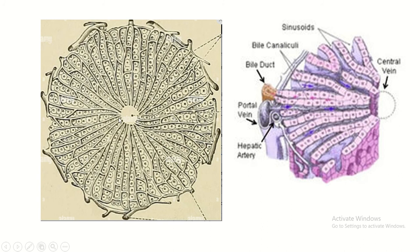This is the classical hepatic lobule. This is the central vein. This is the hepatic lamina, formed by a single layer of hepatocytes. In between the hepatic lamina, this is the hepatic sinusoid. This is the location of the portal triad, which contains smaller branches of the portal vein and hepatic artery.